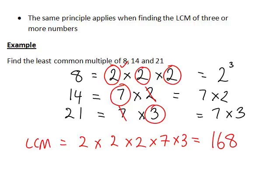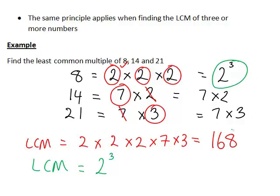Once again, we also have the alternative of looking at the highest power of each prime number that is a factor of any of these numbers and multiplying those together. Two is a factor of both eight and fourteen, and the highest power of two that occurs is two to the power of three. Three is a factor of twenty-one, and the highest power is three to the power of one. Five does not occur for any of these numbers. Seven is a factor of both fourteen and twenty-one, and the highest power of seven is seven to the power of one. So therefore, two cubed times three times seven, which again gives a hundred and sixty-eight.